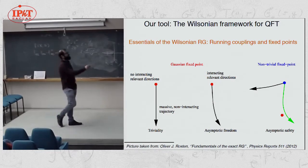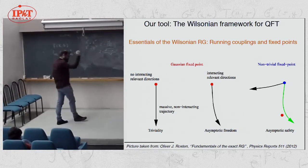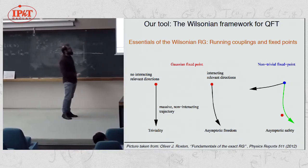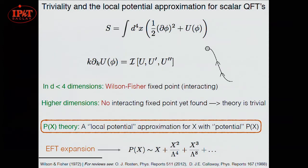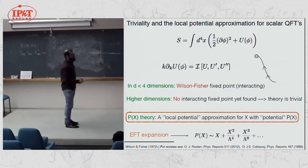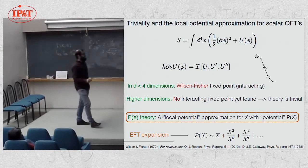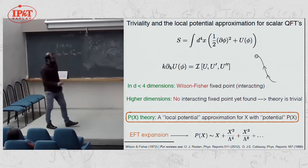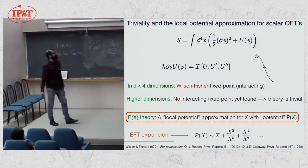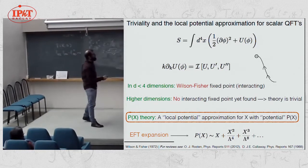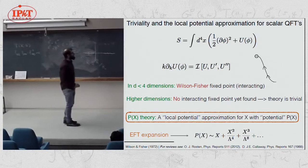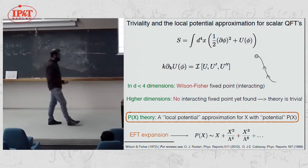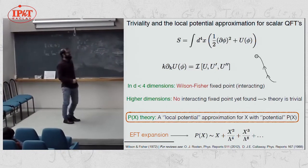If there is no fixed point to which the RG flow is attracted in the UV, we say the theory is trivial. This is a problem particularly for scalar field theories, because in the simplest approximation — the local potential approximation, a theory without higher derivative interactions — there has not been found any UV fixed point in dimensions higher than four. So scalar field theories in the local potential approximation have been shown to be trivial.